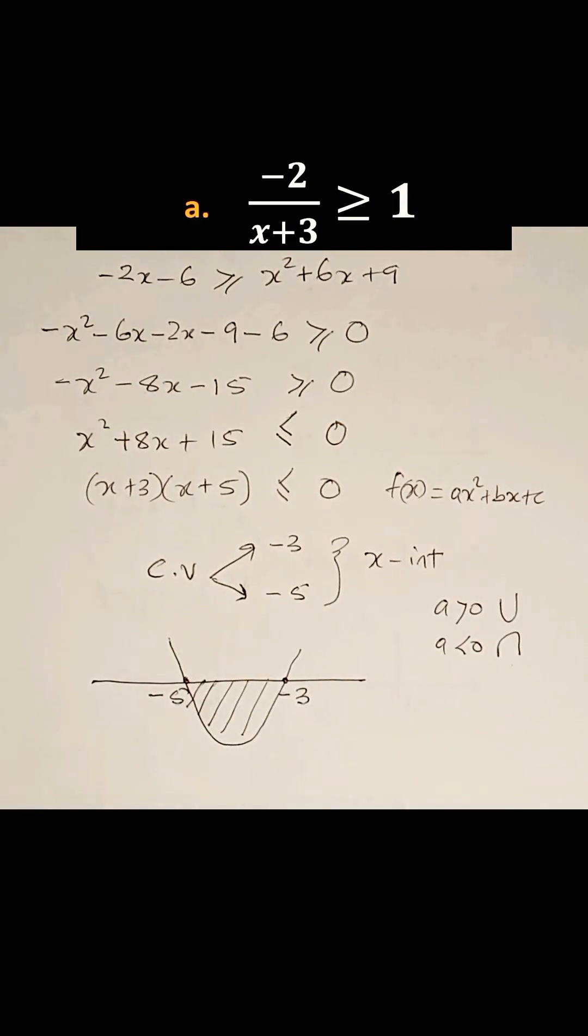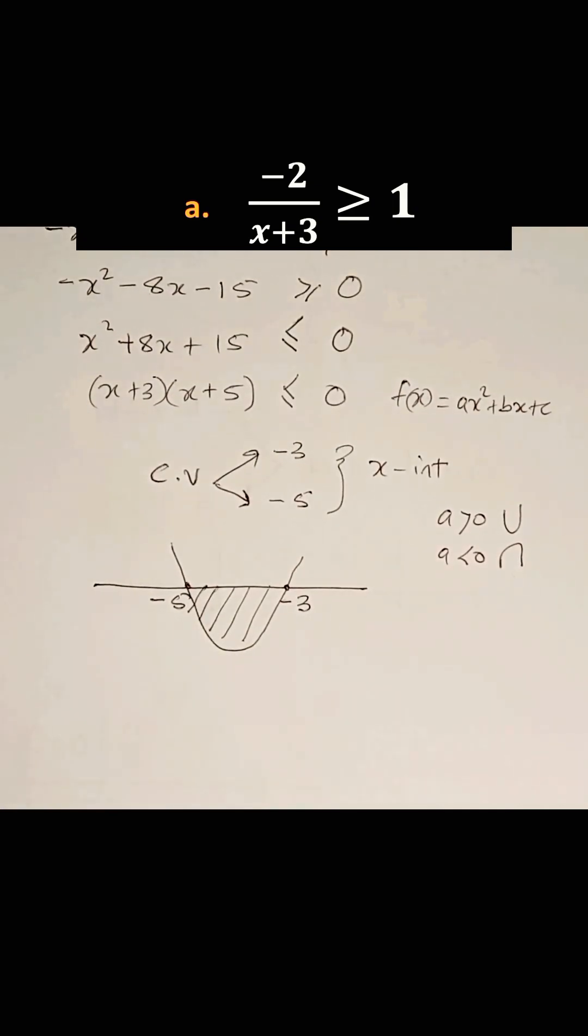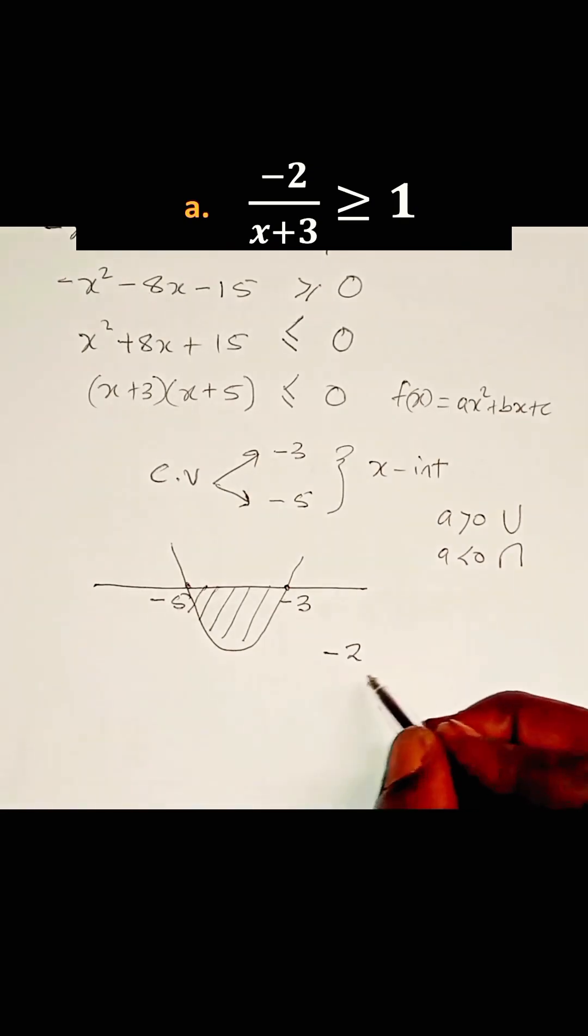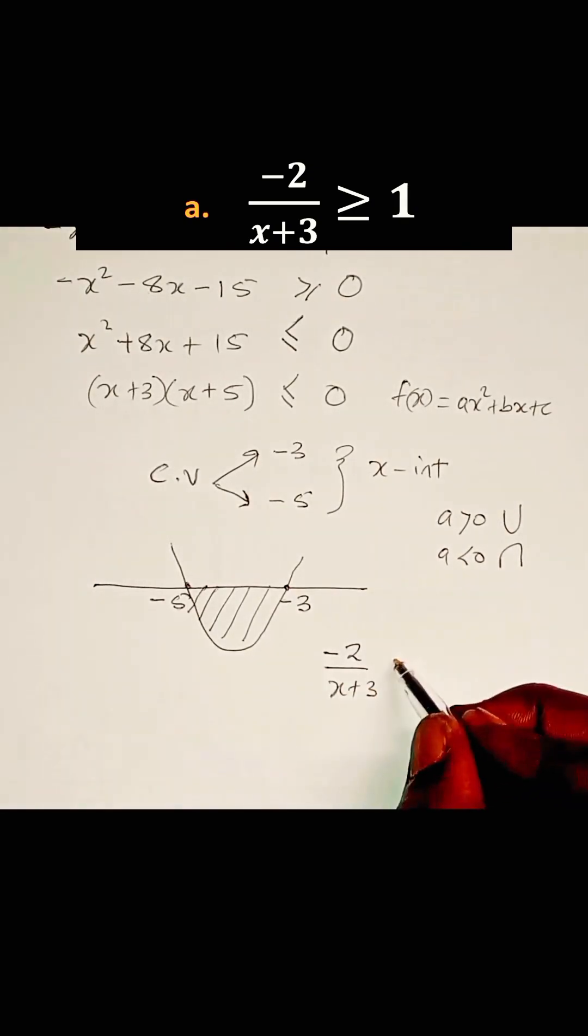If we consider the original inequality, the original inequality was -2/(x+3) greater or equal to 1.